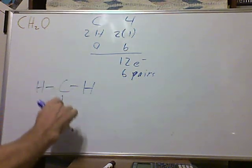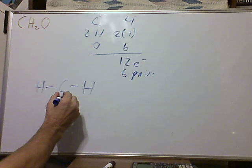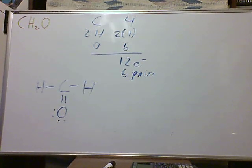So to get eight electrons, we're going to take a pair off the oxygen, slide it into the bond, make it a double bond. So now the carbon has its eight electrons, the oxygen still has its eight electrons, and each hydrogen has its one bond.